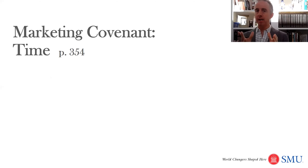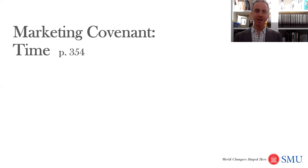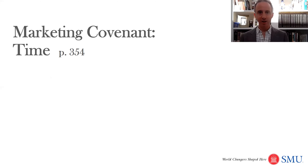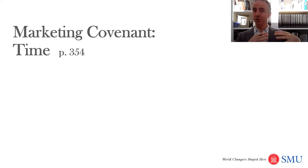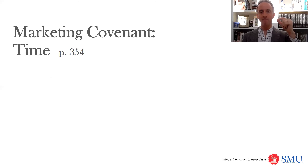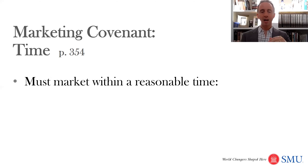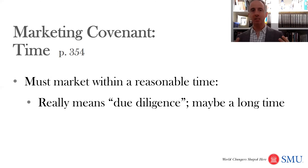Let's talk about the implied covenant to market. First question: how quickly do you have to market and sell the natural gas you're producing? This is usually not a big issue with oil, because there's always somebody willing to purchase oil. But if you had a bunch of natural gas, that takes a lot of infrastructure — you need to pipe it to where it's needed and either store it or use it right away. So with natural gas, it's often a big deal for the oil and gas company to find somebody that wants to purchase it.